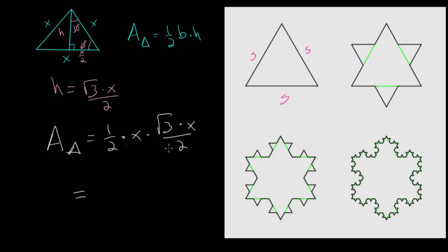And if we simplify everything we have 4 in the denominator, we have the square root of 3, and X times X is X squared. And this formula here we will use repeatedly when figuring out the area of this Koch snowflake. So we can copy this formula and use it as we go.